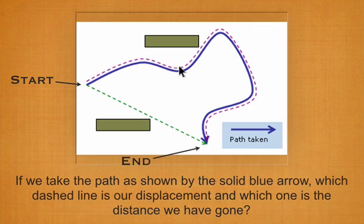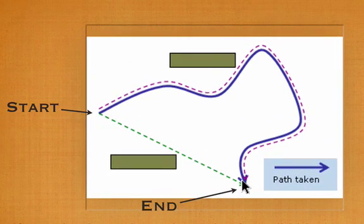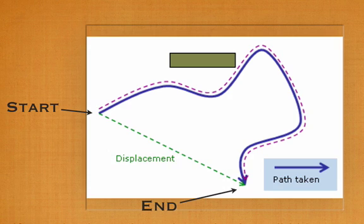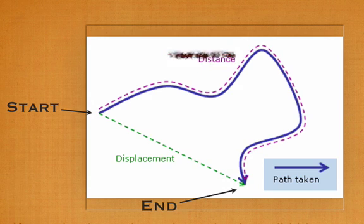We have two options: the purple dashed line and the green dashed line. The green line shows where we started and where we ended — we don't care what path we took in between for displacement. The green line is our displacement. If we want to know the distance, we have to consider the whole path we took — that's the purple line, our actual distance.